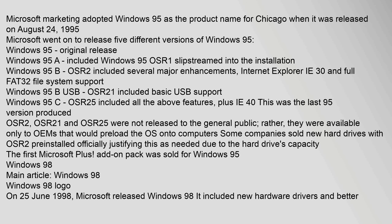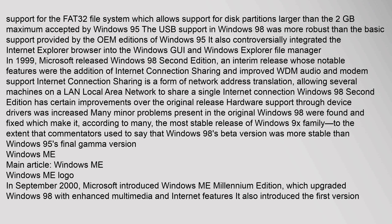On 25 June 1998, Microsoft released Windows 98. It included new hardware drivers and better support for the FAT32 file system, which allows support for disk partitions larger than the 2GB maximum accepted by Windows 95. The USB support in Windows 98 was more robust than the basic support provided by the OEM editions of Windows 95. It also controversially integrated the Internet Explorer browser into the Windows GUI and Windows Explorer file manager.